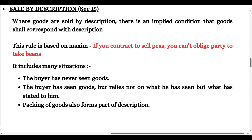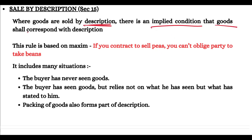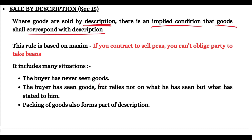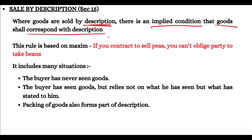The second implied condition is sale by description under Section 15. When the seller and buyer have a contract and the product is sold by description, then there is an implied condition that the goods must match the description that has been given. If the description says certain things, the goods you give must match that description.